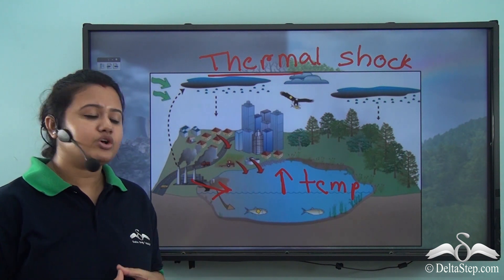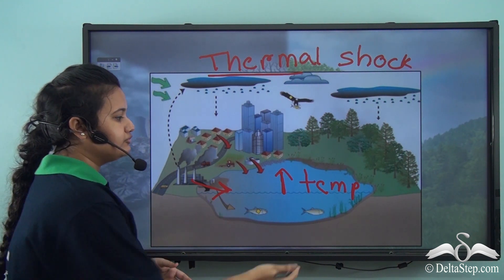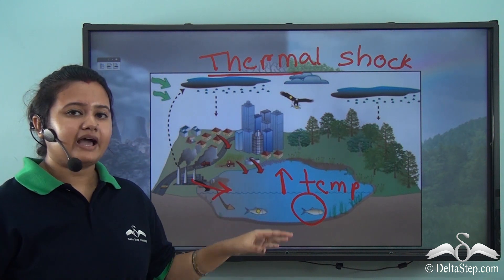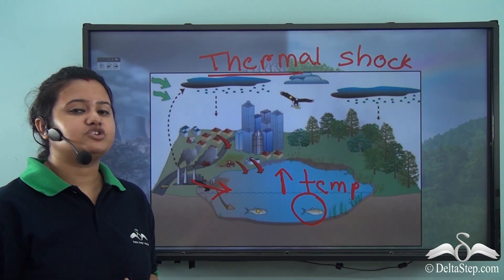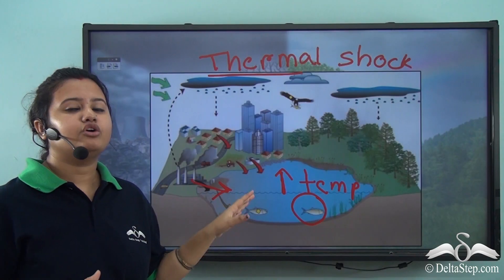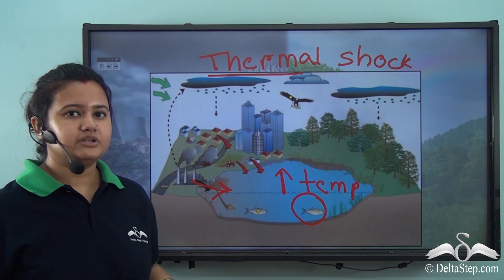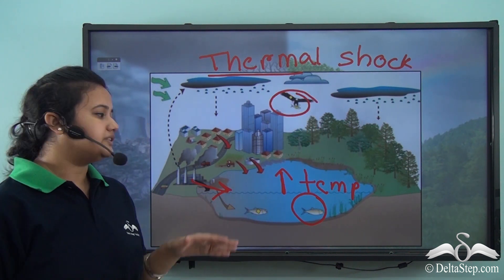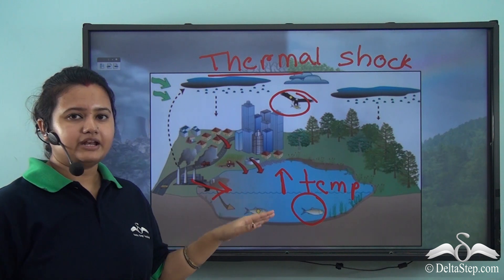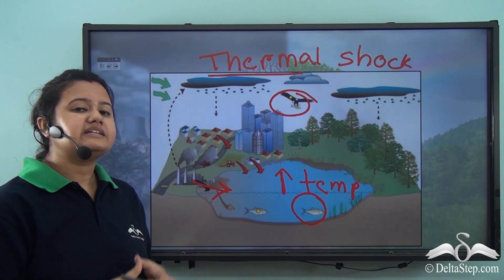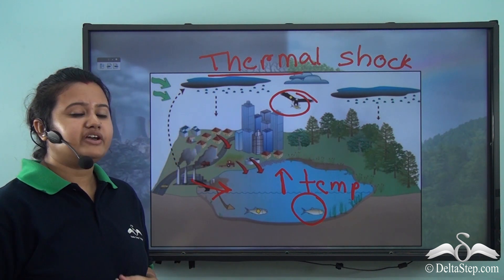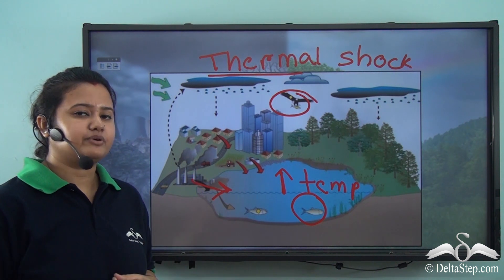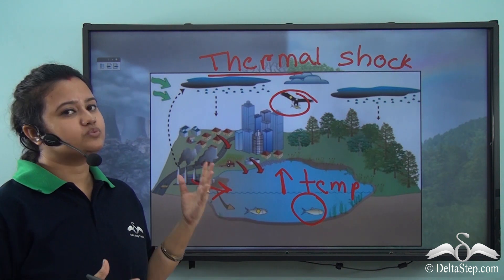Thermal is related to temperature, so thermal shock means there is a sudden increase in the temperature of the water bodies that is not tolerable for marine animals, causing them to eventually die. The death of marine animals also affects the sea birds that feed on them, so the entire ecosystem gets affected.